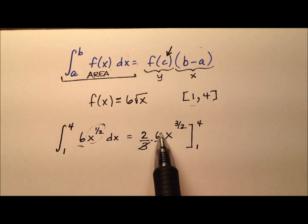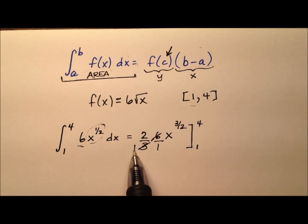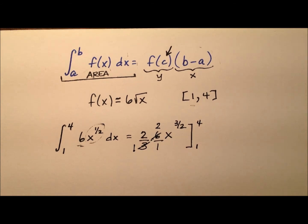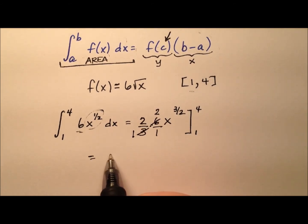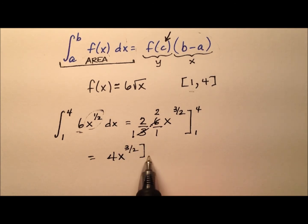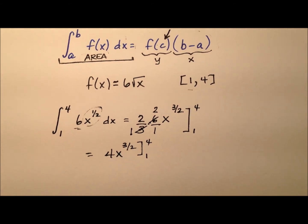Let's multiply by that 6 that was already out there. And we're going to be taking this from 1 to 4. So let's clean it up a little. We have a 3 and a 6. I can divide a 3 out of both of those, and it looks like we're left with 1 and 2. So 2 times 2 is 4, x to the 3 halves, and that is from 1 to 4.